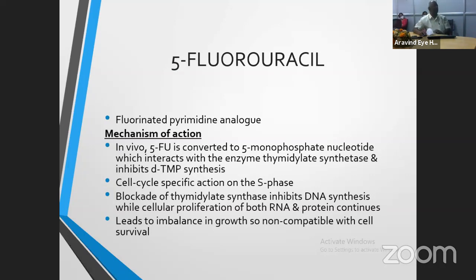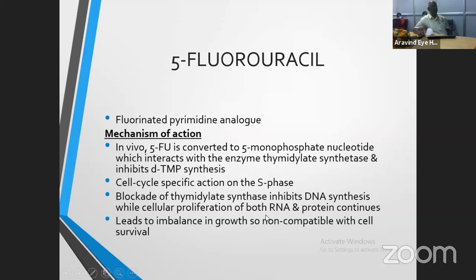5-Fluorouracil is a fluorinated pyrimidine analog. Its mechanism of action: in vivo, 5-FU is converted into 5-monophosphate nucleotide, which interacts with the enzyme thymidylate synthetase, thereby inhibiting DNA synthesis and fibroblast proliferation. It has a cell-cycle specific action on the S-phase. This blockade of thymidylate synthetase inhibits DNA synthesis, while cellular proliferation of both RNA and protein continue, leading to an imbalance in growth incompatible with cell survival — resulting in very good wound healing control.